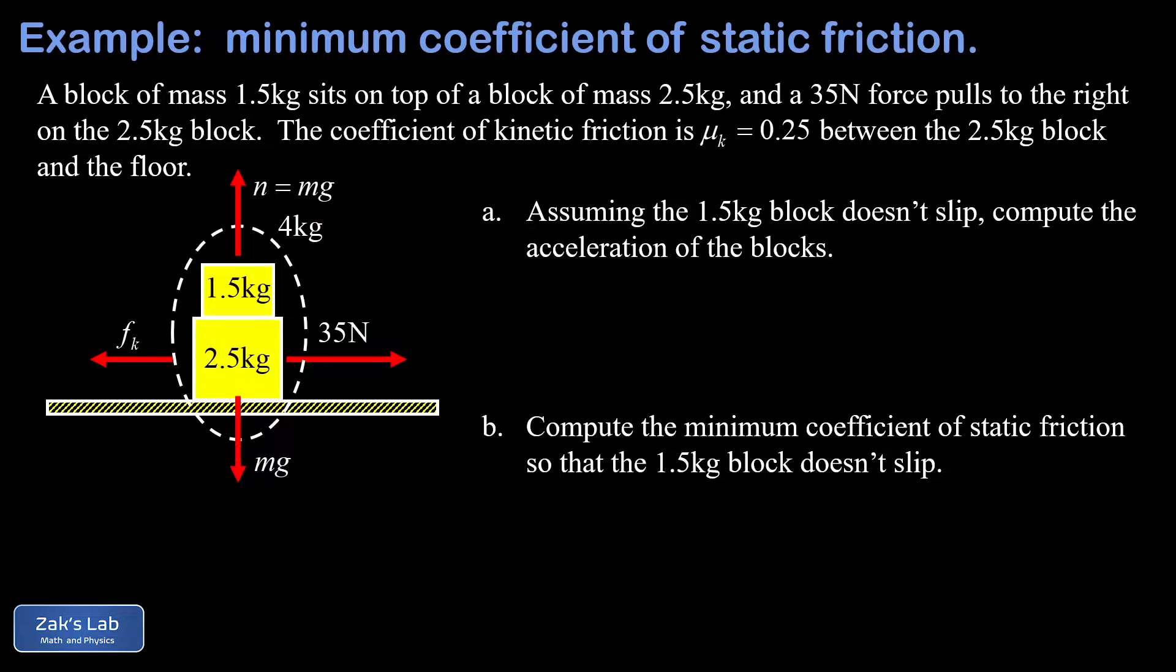So now we can apply Newton's second law in the horizontal direction. We start from the beginning by saying F net equals ma and we're doing the horizontal analysis here, an x component analysis of Newton's second law. Using the standard coordinate system where rightward is positive we'll call the 35 newton force positive.